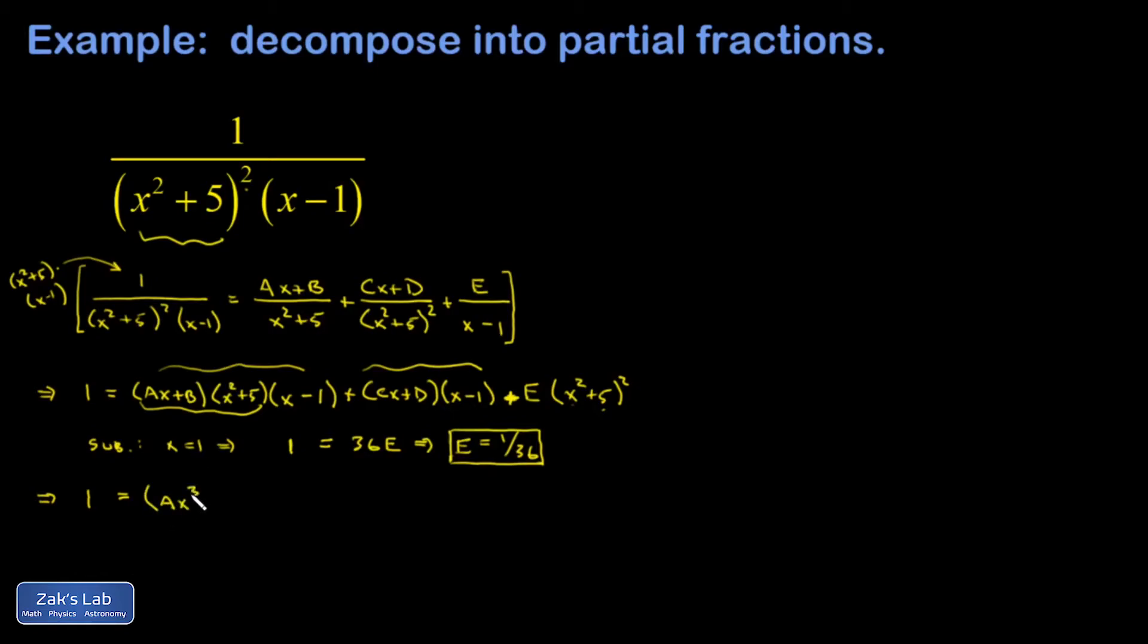So that gives me ax³ plus 5ax plus bx² plus 5b times (x - 1). And if you like, you could expand by multiplying these two binomials in the middle term; it'll just save us some mental energy later. And then in my final term I have an e times (x⁴ + 10x² + 25), so I just squared that binomial using foil. Okay, and then the reasoning goes that if this is going to be true for all x, then the coefficient of each power of x must be the same on the left and right side of the equation.